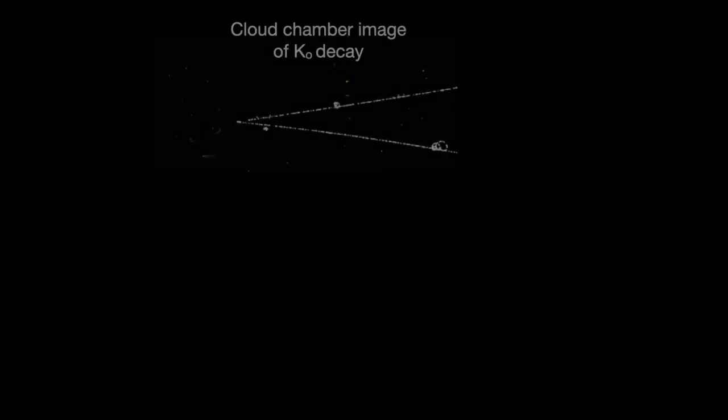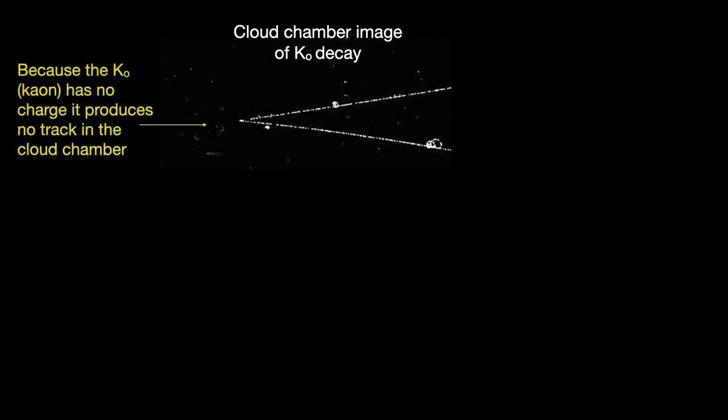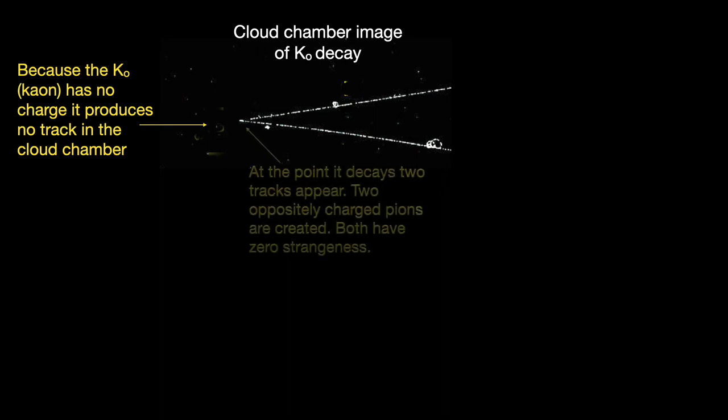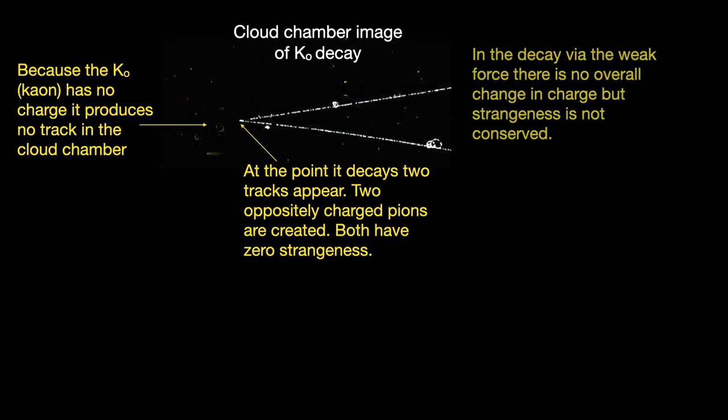All K-ons are unstable. This cloud chamber image of the decay of an uncharged K-on produces the characteristic V-shaped track of two particles produced. Charge is conserved in this change in that two oppositely charged pions are produced, but neither contain a strange quark. Strangeness is not conserved, and this is because the decay was via the weak force or weak interaction.